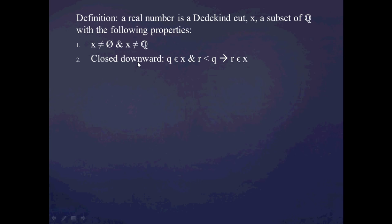Secondly, it's got to be closed downward — informally, it extends to the left forever. That's to say, if I find some rational number Q in X, and some other rational number R is less than Q, then R is also in X. This implies that Dedekind cuts extend to the left infinitely. Thirdly, there's no greatest element in X — meaning as you inch toward the right on the Dedekind cut, you don't just stop somewhere.